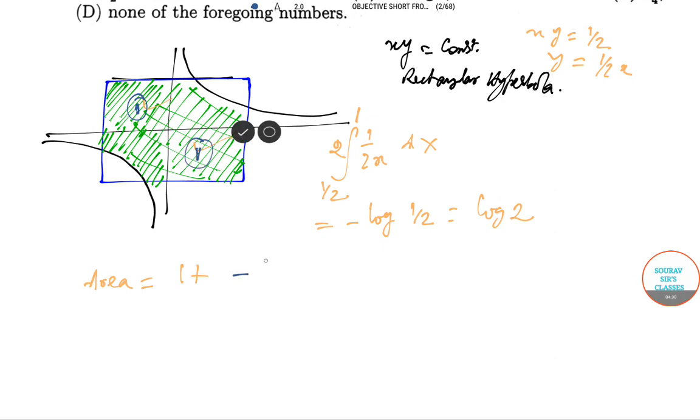So this is 1, this is 1 and the other two part is half log 2 plus 1 into half into 2. So ultimately it is 3 plus log 2.